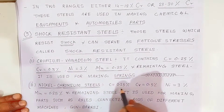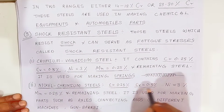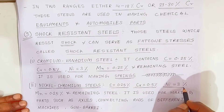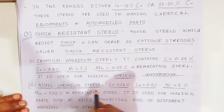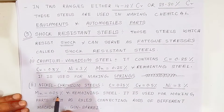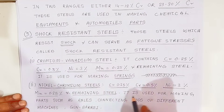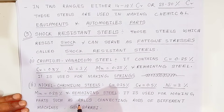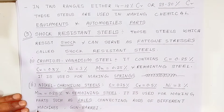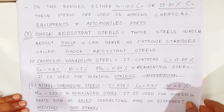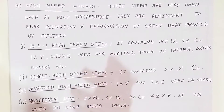The second type of shock resistance steel is nickel chromium steel, containing 0.25% carbon, 5.5% chromium, 3% nickel, and 0.25% manganese. It is used for making parts such as axles, connecting rods of different machines, and gun barrels.